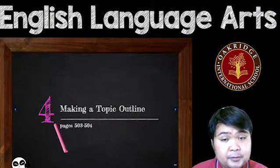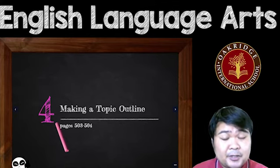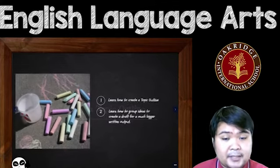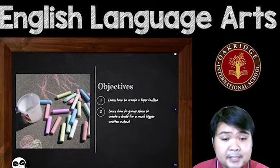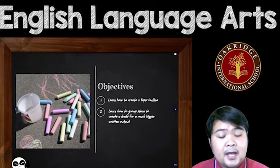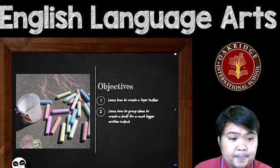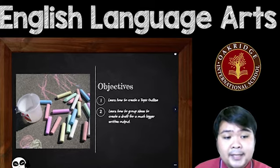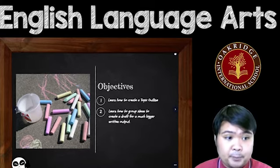This is going to be your writing class, and this is what you're going to be doing for this week — this is your write-up for this week. The objectives of this lesson are: number one, learn how to create a topic outline; and number two, learn how to group ideas to create a draft for a much bigger written output.